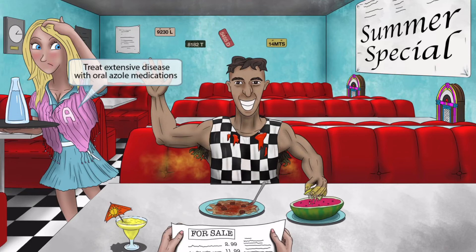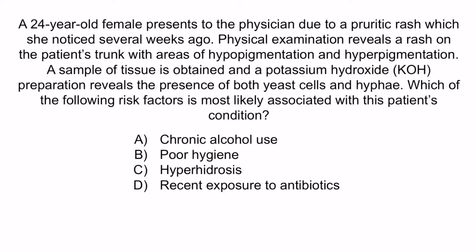Now that we've covered the image, let's review with a question. A 24-year-old female presents to the physician due to a pruritic rash, which she noticed several weeks ago. Physical examination reveals a rash on the patient's trunk with areas of hypopigmentation and hyperpigmentation. A sample of tissue is obtained and a potassium hydroxide preparation reveals the presence of both yeast cells and hyphae. Which of the following risk factors is most likely associated with this patient's condition?